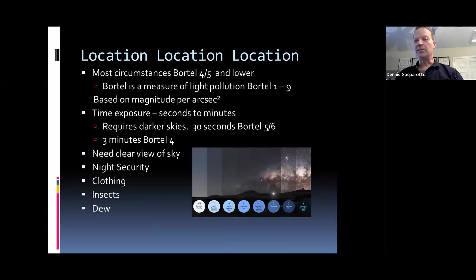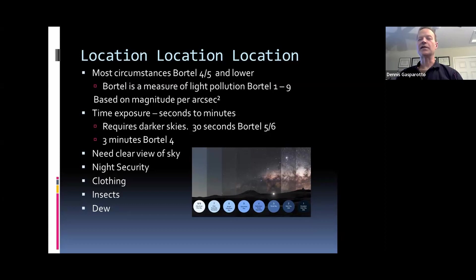The Bortle scale runs from one to nine. Eight and nine — you can't see a whole lot; this would be the Mississauga and Toronto area where you're only seeing a few stars. Clearly that kind of location is going to limit you quite a lot for camera and tripod work. You can use filters and other techniques, but at eight or nine you're basically limited to constellations, the moon, or some planets.